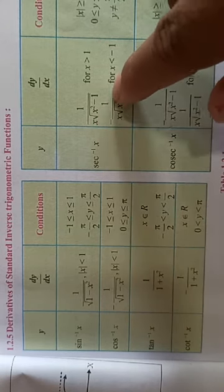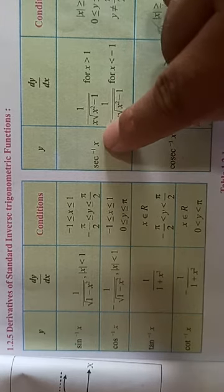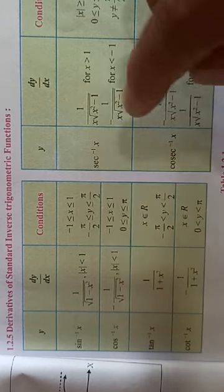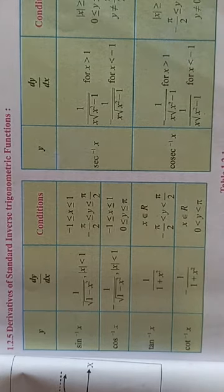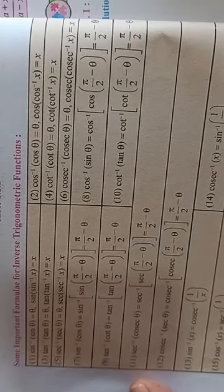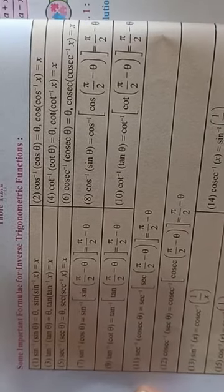Similarly, sec inverse and cosec inverse. The first formula is important, the second formula is also important. For sec inverse x, the formula is 1 upon x times square root of x square minus 1. And cosec inverse x's formula is minus 1 upon x times square root of x square minus 1. These are the basic formulas for trigonometric inverse derivatives.